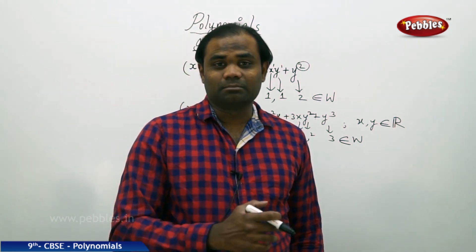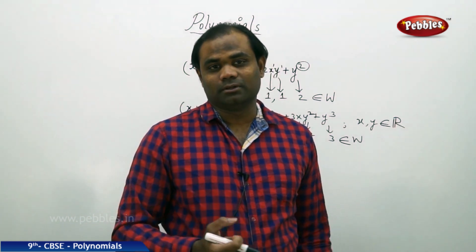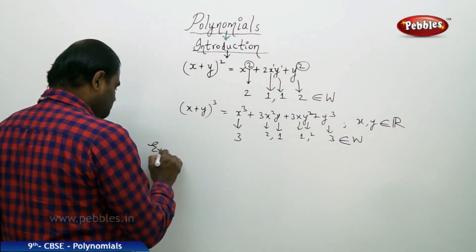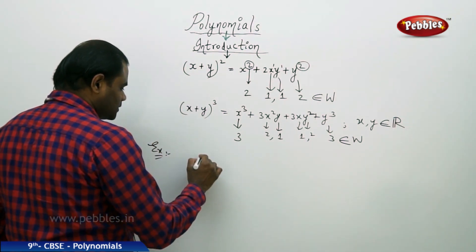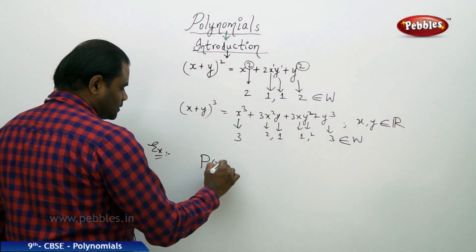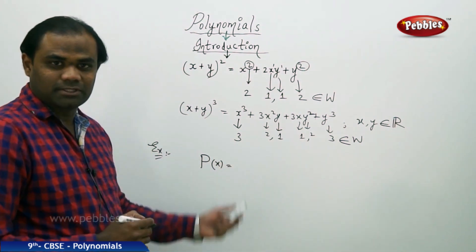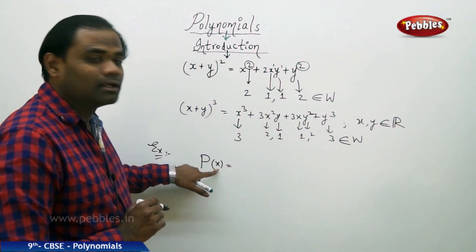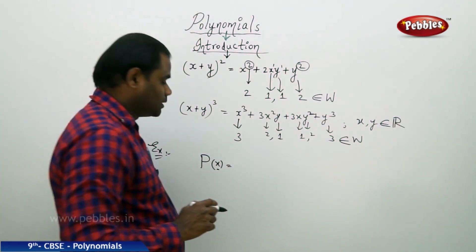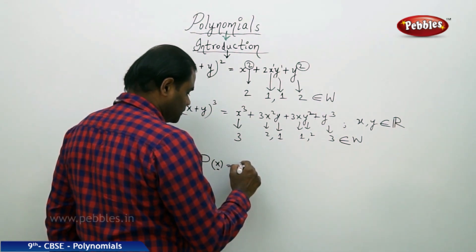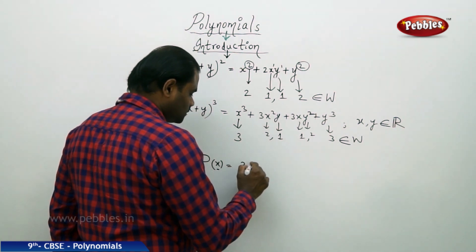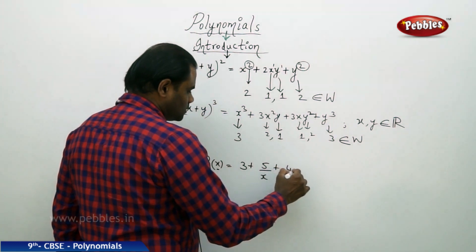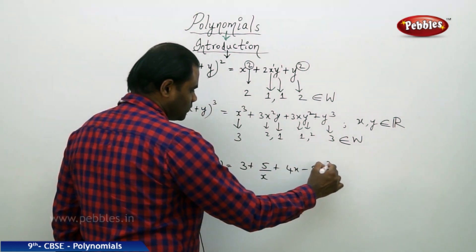Let's see an example which is not a polynomial to understand the concept better. Say p(x) denotes a polynomial in variable x belonging to the real numbers R. Suppose p(x) = 3 + 5/x + 4x − 5x².